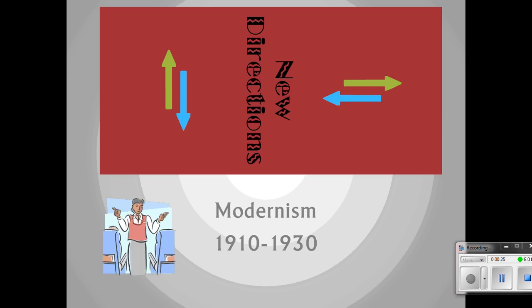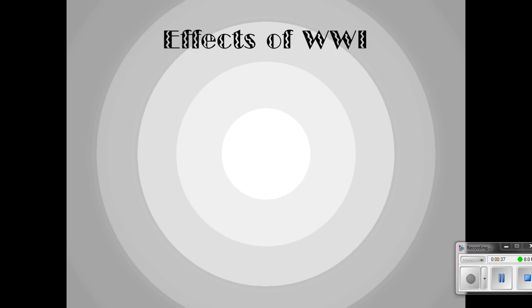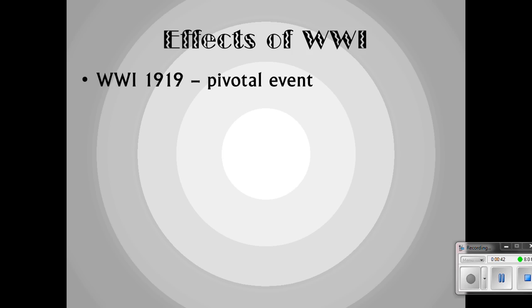So much happens during this time period — during World War I and right before the Great Depression — that it's worth its own time period. World War I occurs and ends in 1919. It ends up being an amazingly important event in our history because for the first time, we lose our optimism as a society. Up until this time, we experienced two wars on our own soil and were still able to maintain our optimism, but the events of World War I sort of destroyed that.